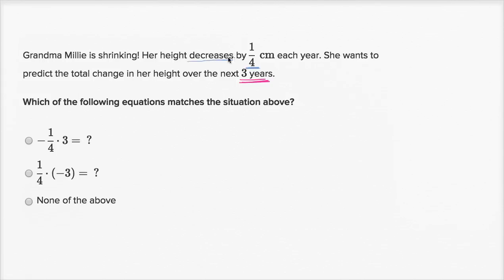So our height is decreasing. We could view that as the change in her height each year is a negative fourth of a centimeter, and that's going to happen for three years. So we would multiply negative one-fourth times three, which is exactly what's happening in this first choice right over here. Her height is decreasing by a quarter centimeter each year. That's this part right over here. And she's doing this for three years.